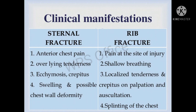Under rib fractures, the manifestations include pain at the site of injury — whether the first, second, third, fifth, or ninth rib — shallow breathing, localized tenderness and crepitus on palpation and auscultation, and splinting of the chest, meaning the chest will not be able to move and will be very rigid.